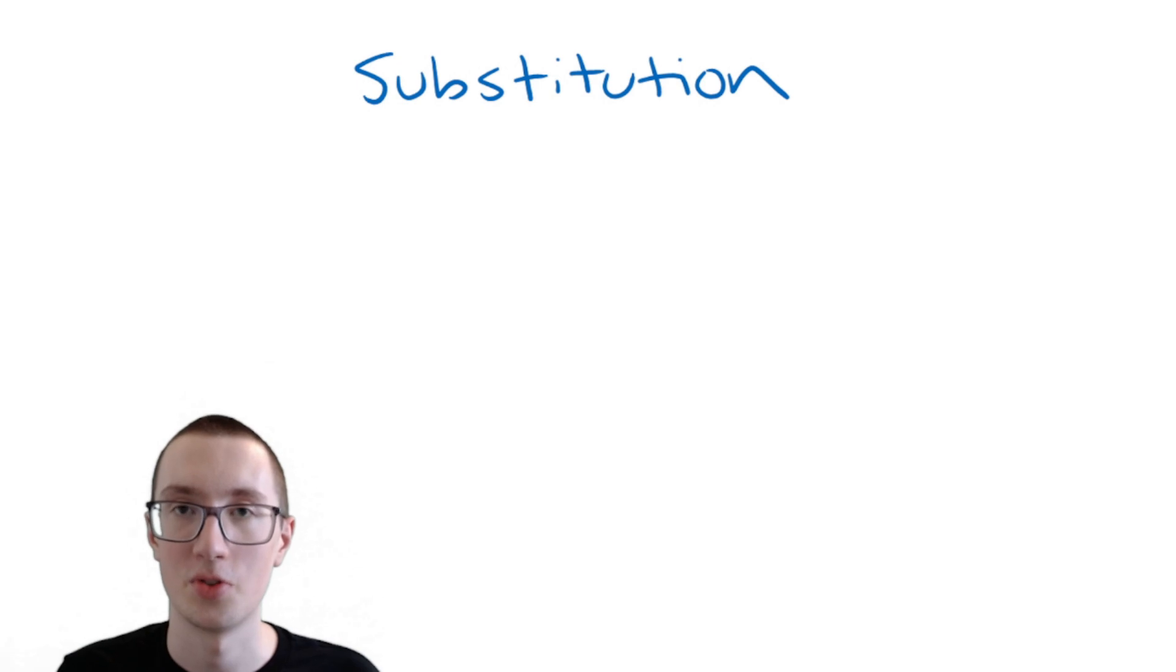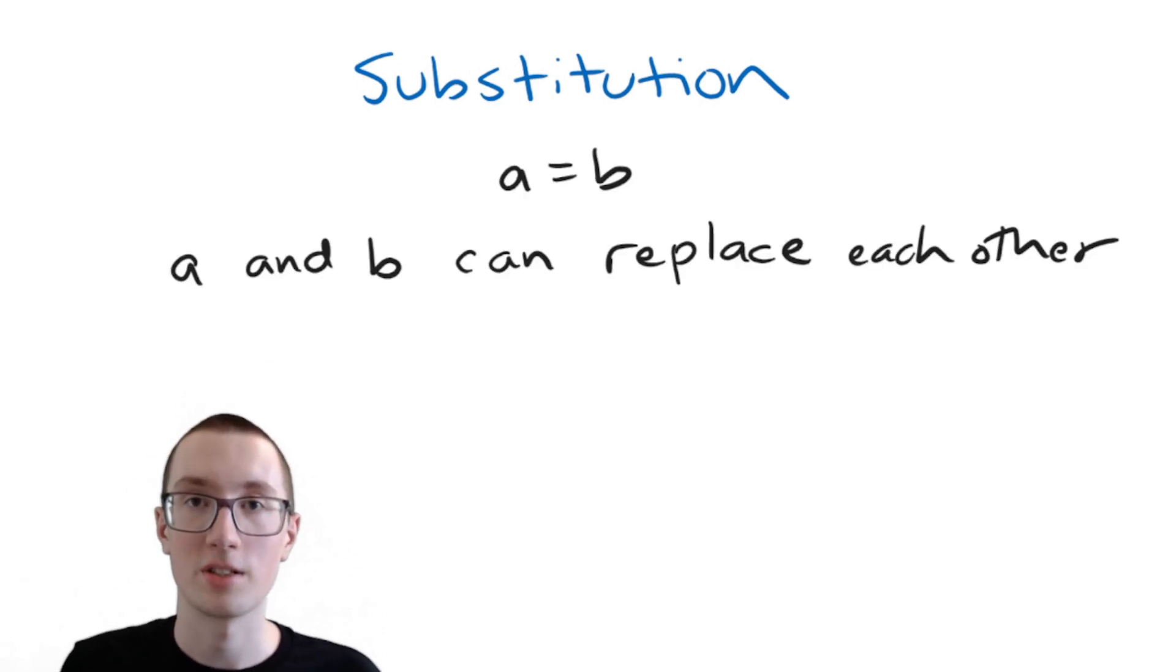we have the substitution property of equality. This basically says that if you have A and B and they're equal, then in any equation, A and B can replace each other because they're the same. So for example,